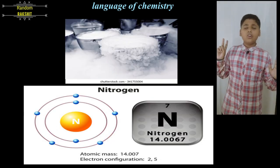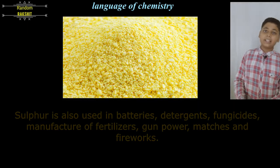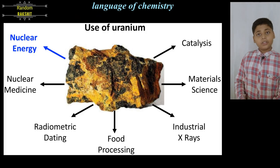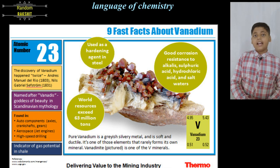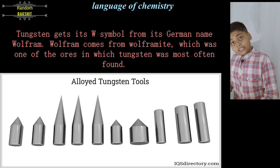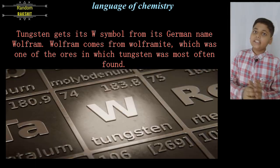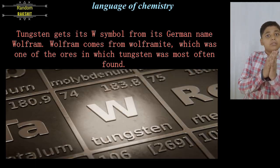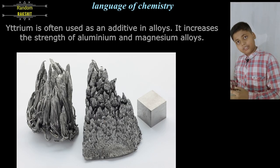N for nitrogen, O for oxygen, P for phosphorus, S for sulfur, U for uranium, V for vanadium, and W for tungsten because tungsten is also called wolframite—that is why it starts from W—and the last one is yttrium.